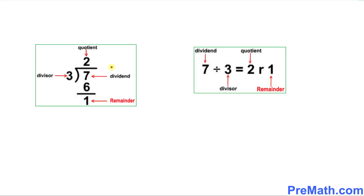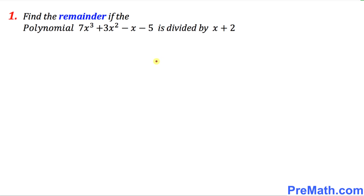Before we go any further, let's quickly go over these basics of the division algorithm. Here's the anatomy or the body parts of this division. As you can see: divisor, quotient, dividend, remainder — and here is our very first example.